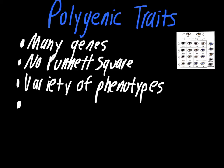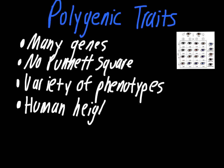Other examples of polygenic traits include human height, which also has environmental factors like nutrition that impact it. Most traits in people — aside from single-gene traits like hitchhiker's thumb, widow's peak, and dimples — such as hair color and eye color, are controlled by multiple genes. That's why you see such a tremendous variety in these characteristics.